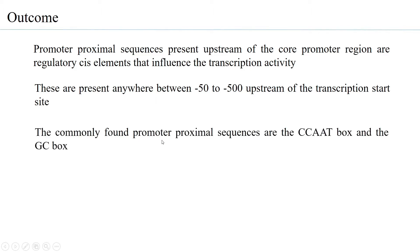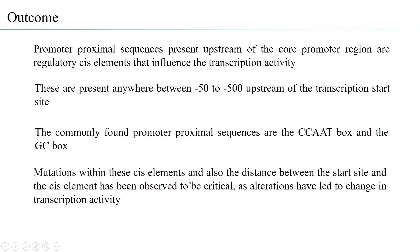The commonly found promoter proximal sequences are the CAAT box and the GC box. Mutations within these elements and the distance between the start site and the element are highly critical, as alterations in the sequence or distance from the transcription start site have led to changes in transcriptional activity. In many cases, it is almost like not having those promoter elements at all.